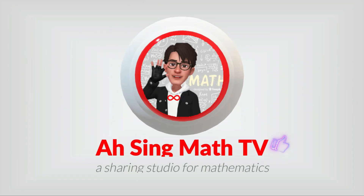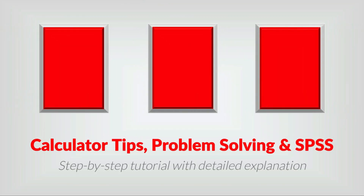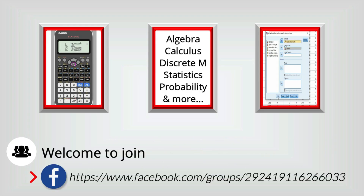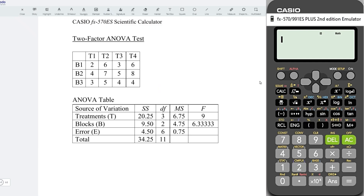Hi, this is Async. You are now watching AsyncMath TV. Today, we'd like to show you how to create a two-factor ANOVA table by using a calculator.